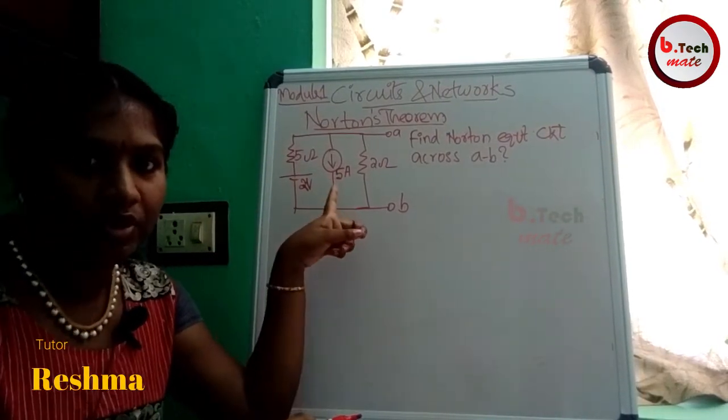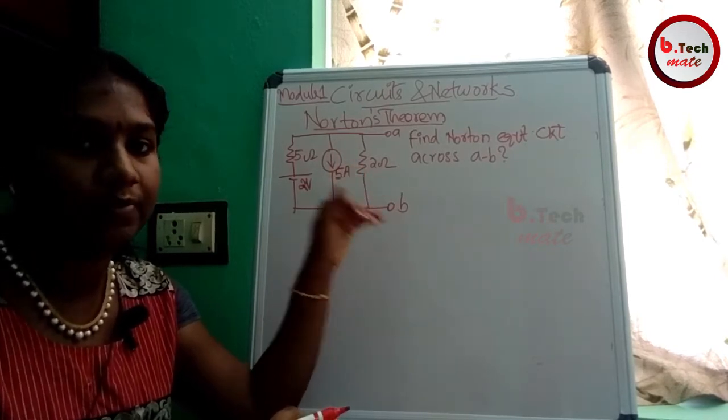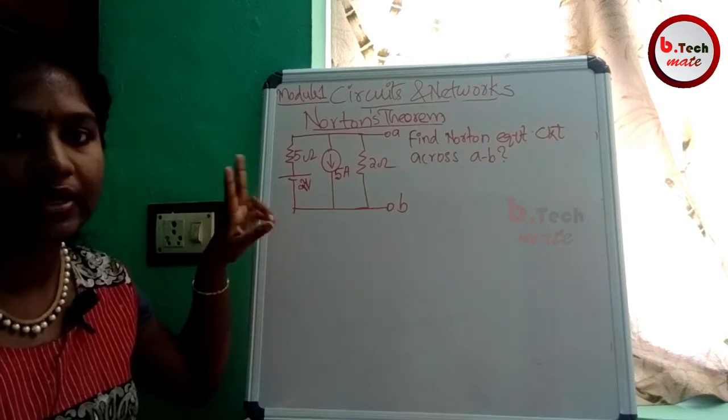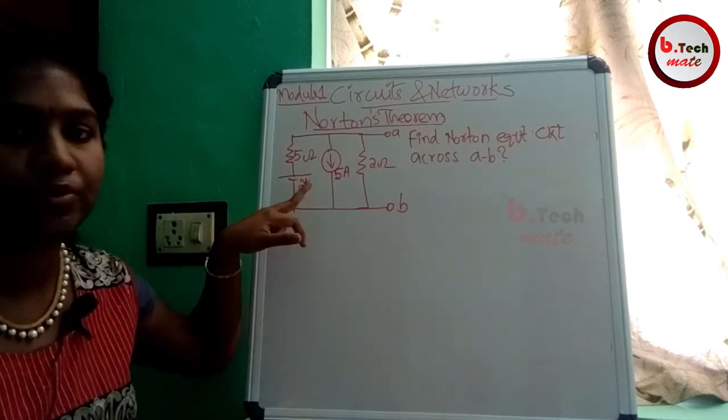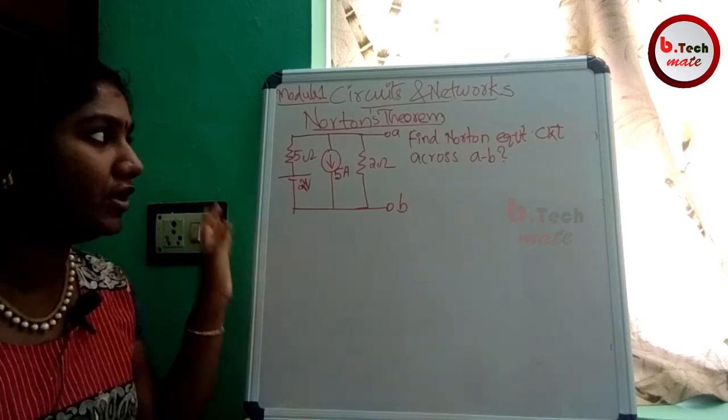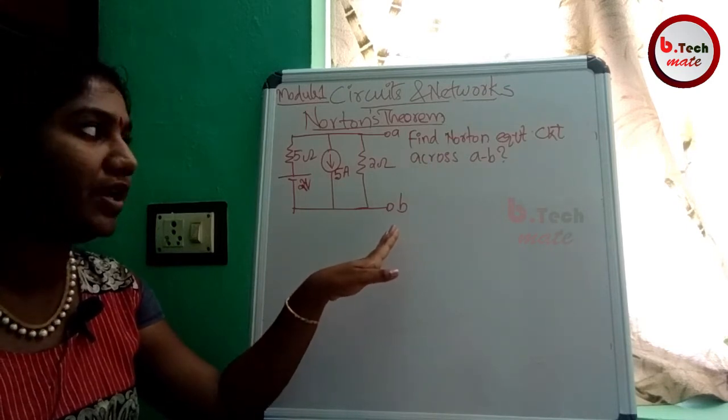The first problem is to apply Norton's theorem to a DC circuit. Find Norton equivalent current across AB terminals. This is the first step.